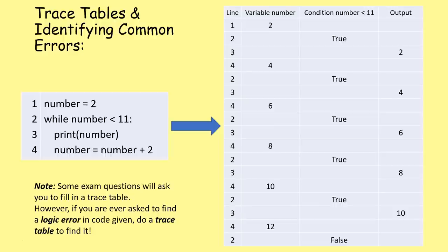Sometimes you'll have to use a trace table to identify an error in a program. Any time you need to identify an error, do a quick trace table. Pay attention to where a variable has been updated unexpectedly or the output of a condition isn't what you'd expect. Remember: in the exam they will give you the exact number of columns and rows required. If you think you need less or more than they've given you, you have made a mistake - go back and double check.